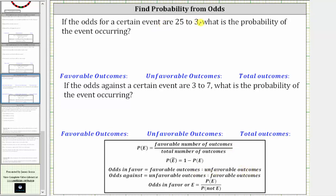So because the odds are 25 to three, this indicates there are 25 favorable outcomes and three unfavorable outcomes, which means there are a total of 25 plus three, or 28 total outcomes.